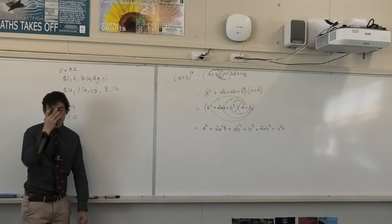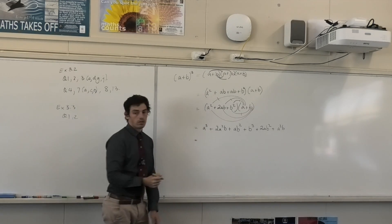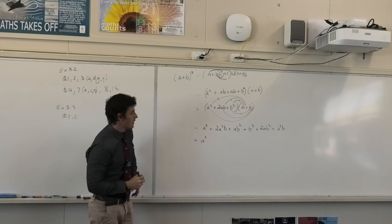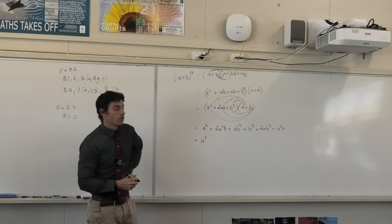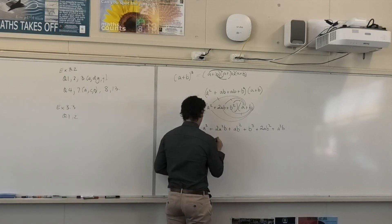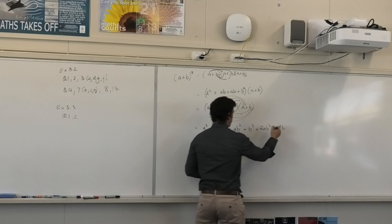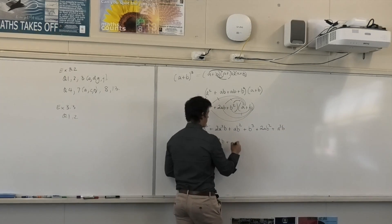What do I need to do now? Combine like terms. So have I got any other A cubeds? So it stays as A cubed. Have I got any other A squared Bs? So I've got 2A squared B. Are there any others? The last one. So what should that become? 3A squared B. Okay, so I can put a little line through those if I like. What have I got left?